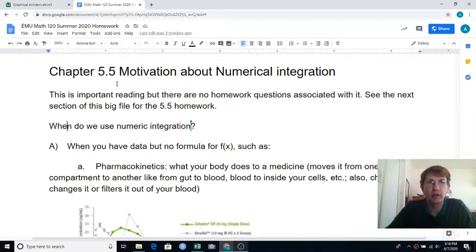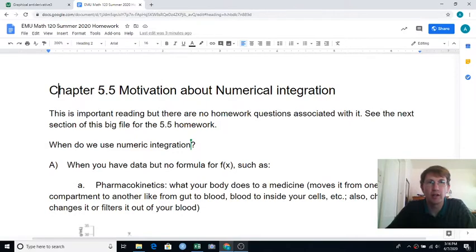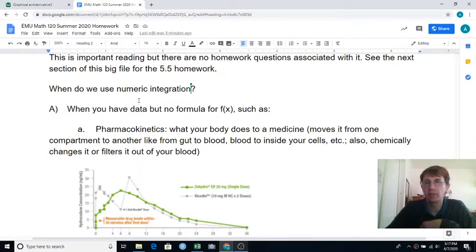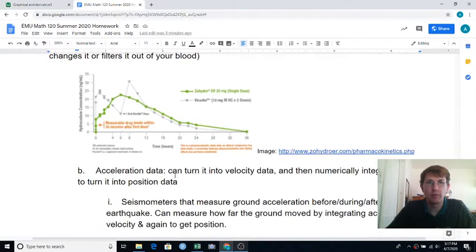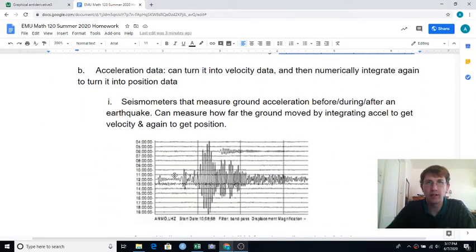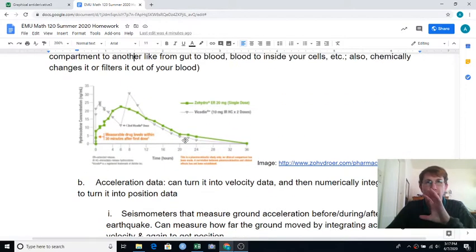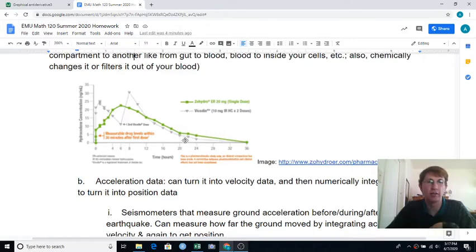So in the big homework file here, I have a section that's not actual homework yet, it's just motivation. We use numerical integration in a bunch of different cases. Pharmacokinetics is an important one where we've got data on how much of a medicine is in someone's body as time goes on. If you've got acceleration data, you can turn that into velocity data and then again to position data. This is the kind of when you have data section rather than formulas.